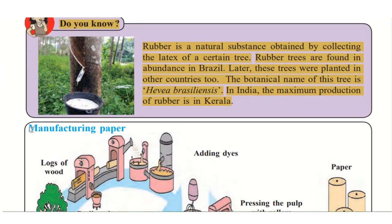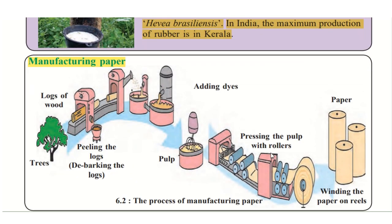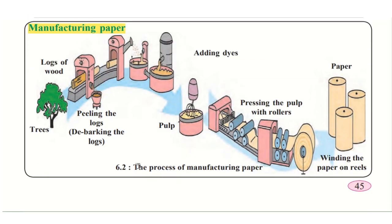Now let's look at the manufacturing of paper. This is a graphical representation of the process of manufacturing paper. Trees are cut down and the logs of wood are processed — the outer bark, that is the skin of the wood, is peeled off. This is called debarking the logs. The bark is removed, then the wood is chopped and made into fine particles. Then some water, chemicals, and dyes are added.